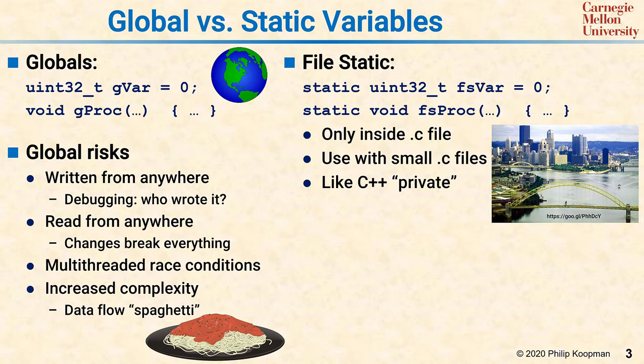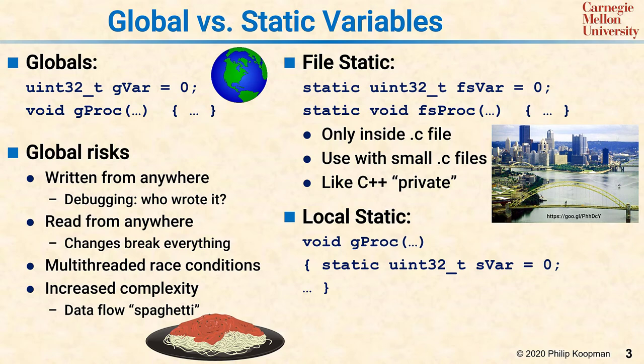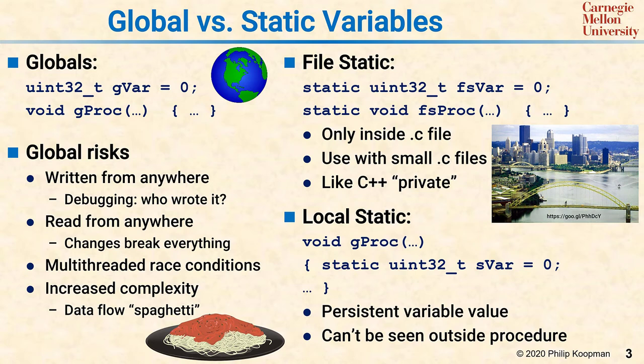A third way to define variables is to define them local static. This involves first putting the variable declaration inside a procedure, and second, using the static prefix in front of that local variable definition. Variables defined inside procedures are only usable inside that procedure. What the static keyword does in this case is make sure that the value persists across multiple procedure calls. So in this example, the variable svar will only be initialized once at the start of the program and will be maintained in value across multiple calls of the procedure GPROC. svar is only visible inside GPROC and other procedures will not be able to see it. Local static variables have the advantage of providing persistent values and also minimize scope so that only code in that procedure can see it. A local static variable is like having a single house in a city — you have to enter the house before you can even see the variable.